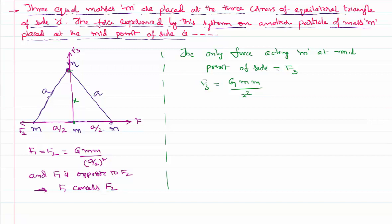So I know this is an equilateral triangle, so this side is 60 degrees. X is the opposite side, a by 2 is adjacent side. Then I can write tan 60 in that right angle triangle. Tan 60 is opposite side by adjacent side. Do you know tan 60 is root 3?